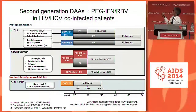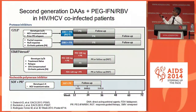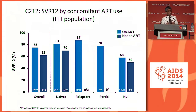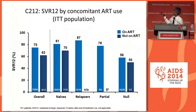Looking at second-generation DAAs combined with PEG interferon and ribavirin to shorten duration of therapy, there are three important studies. The C212 study looks at simeprevir plus PEG and ribavirin in a response-guided fashion. With simeprevir, we were starting to see 75% sustained virological responses, and it was possible to shorten duration of therapy for the vast majority of patients. Interestingly, patients not on ART — despite higher CD4 counts — tended to have slightly lower sustained virological responses.